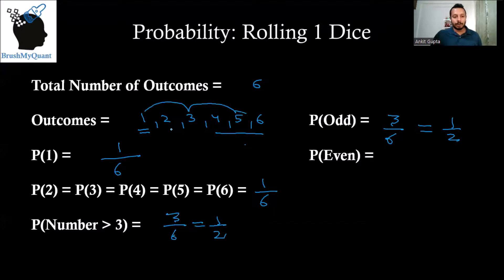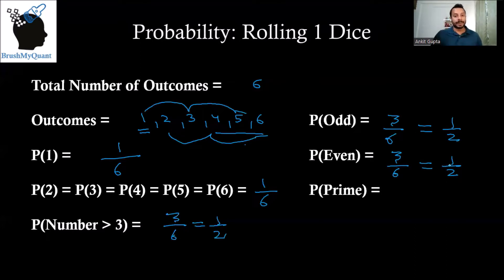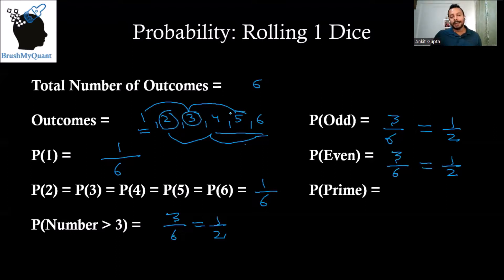What about getting even numbers? Out of the six outcomes, three outcomes — two, four, and six — are even. So probability of getting an even number is also three by six, equal to one by two. What about probability of getting a prime number? Prime numbers are numbers which have only two factors: one and the number itself. Out of the six numbers, two, three, and five are prime. So probability of getting a prime number is also three by six, equal to one by two.